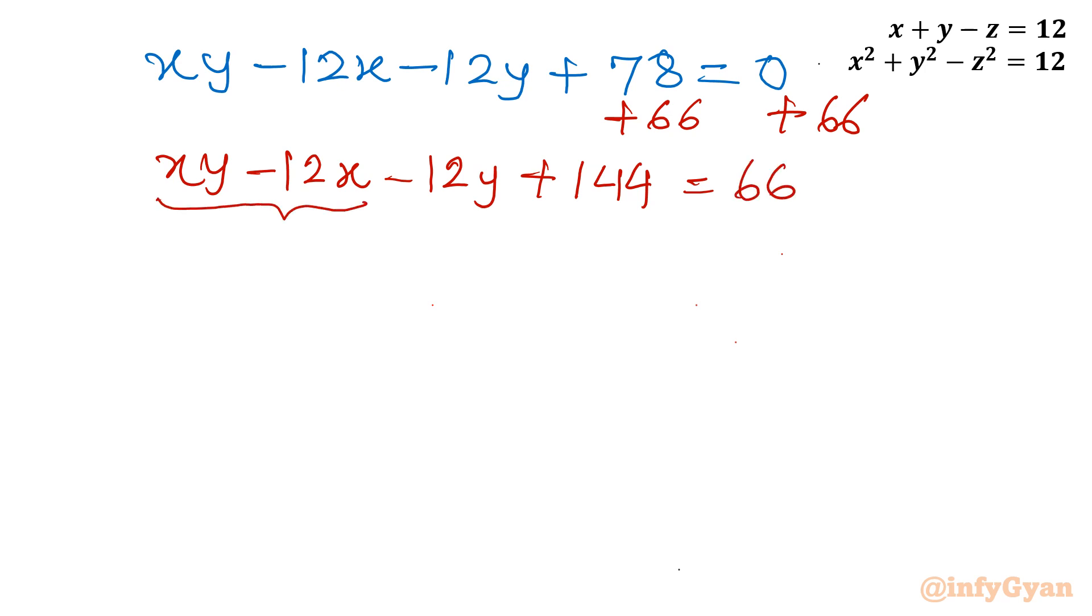Now x is common, 12 is common. So let's consider factorization. I will write x common, it will be y minus 12. I will take minus 12 common in bracket y minus 12. And right hand side it is 66. Now overall x minus 12 times y minus 12 equal to 66.